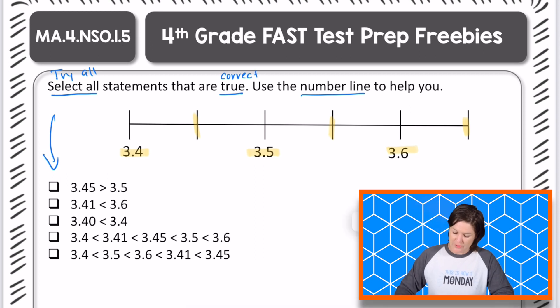I'm going to start with the first one. We have 3.45. Well, hang on a second, because right now I only have it going to the tenths place with 3.4, 3.5, and 3.6. However, I do know that 3.4 is equivalent to 3.40 hundredths, 3.5 is equivalent to 3.50 hundredths, and 3.6 is equivalent to 3.60 hundredths.